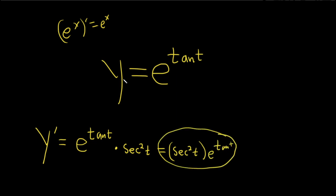That's it. So again, you take the derivative of the outside, which is just e to the tan t, then you multiply by the derivative of the inside, and you're good to go.